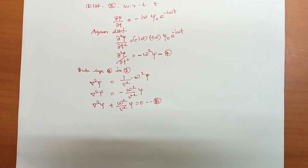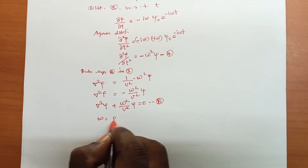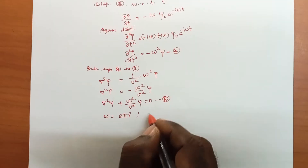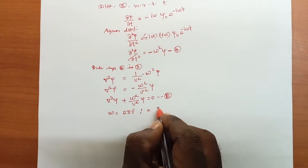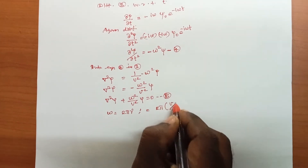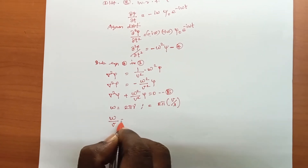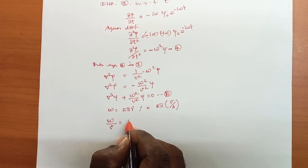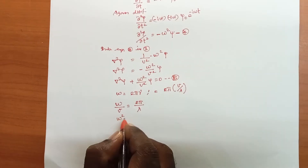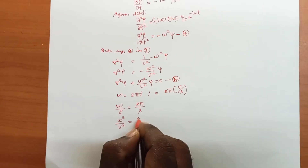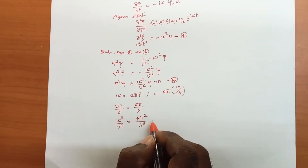We know the angular frequency ω = 2πν, and ν = v/λ, so ω = 2πv/λ. Therefore, ω²/v² = 4π²/λ². This is equation number 6.